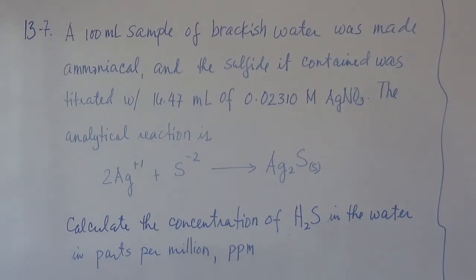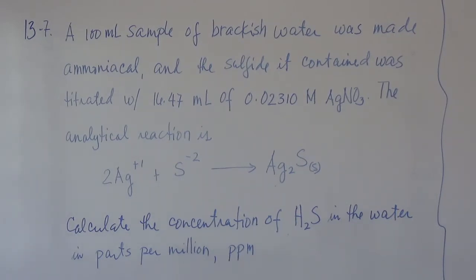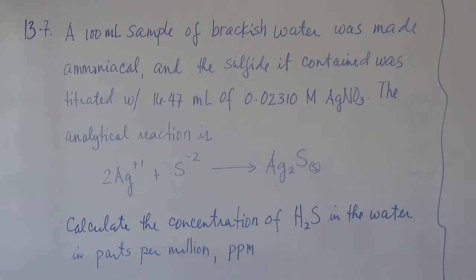Okay, problem 13.7. By the way, problem 13.6, I'll leave it to you. It's more or less the same with problem 13.5, but the only difference is it's a percentage — the percent amount of iron required. So it is a combination of the titration process and gravimetry. You just get the amount of iron or magnetite and divide by the sample. It's more or less the same as gravimetric analysis, but the process is titrimetry — so that is titrimetry gravimetry. Okay, 13.7.